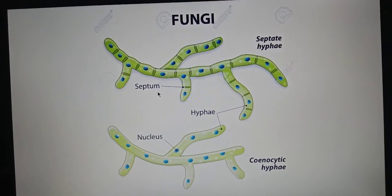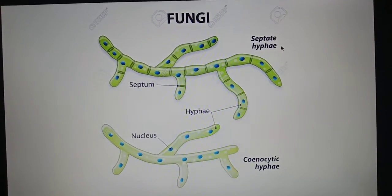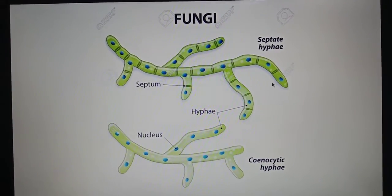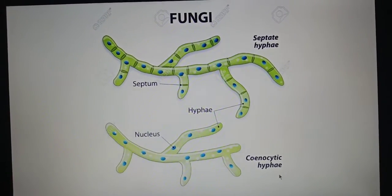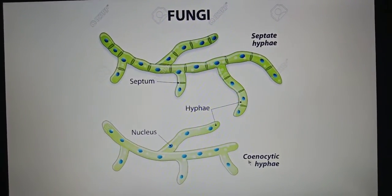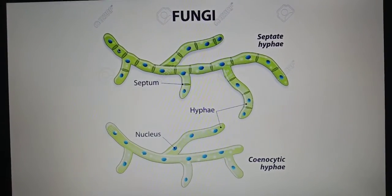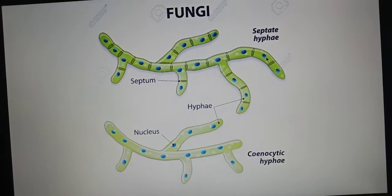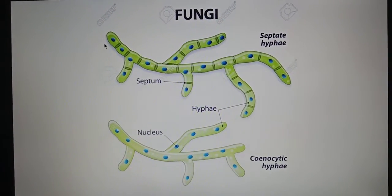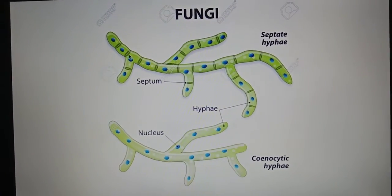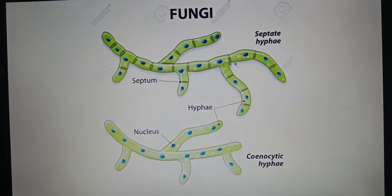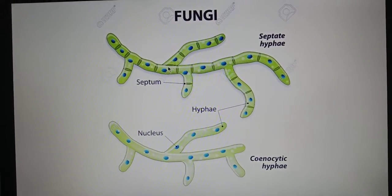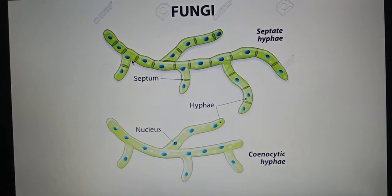If a septum is present, such hyphae are known as septate hyphae. Those without walls are called aseptate or coenocytic hyphae. Each compartment of the septate filament, guarded by walls, has its own nucleus — the blue dots represent nuclei. So the hyphae are septate and each compartment has its own nucleus.